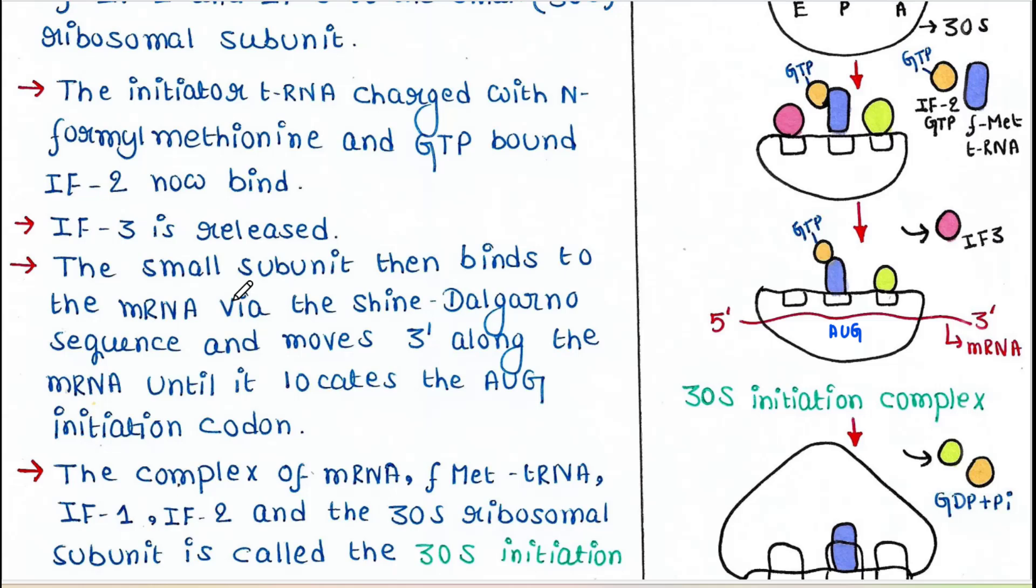The small subunit then binds to the mRNA via the Shine-Dalgarno sequence and moves 3' along the mRNA until it locates the AUG initiation codon. So it is the AUG initiation codon, placed just below the tRNA.